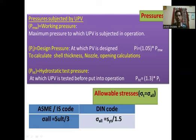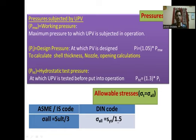The allowable stress should be equal to the tangential, hoop, or circumferential stress. As per ASME or IS code, sigma allowable = SUT / 3, where SUT is the ultimate tensile stress. According to DIN code, sigma allowable = SYT / 1.5, where SYT is the yield tensile strength.